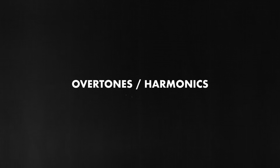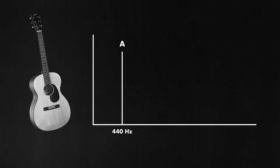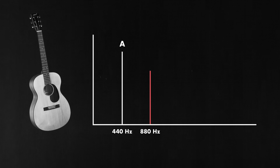One of the things discussed in the book is the idea of overtones, or harmonics. The basic principle is that objects in the world vibrate at several different frequencies simultaneously, and those frequencies are mathematically related. For example, if I play the note A on a guitar at 440 Hz, you won't only hear 440 Hz, but also integer multiples of that frequency: 880 Hz, 1320 Hz, 1760 Hz, and so on.